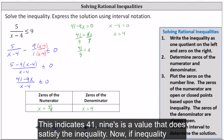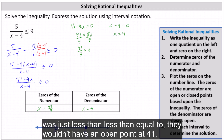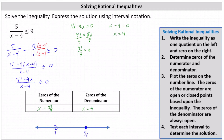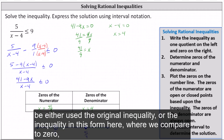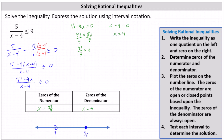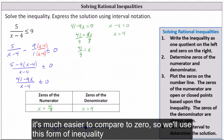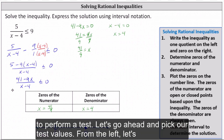This indicates 41 ninths is a value that does satisfy the inequality. If the inequality were strictly less than, we would use an open point at 41 ninths. Next, we test each interval to see whether it satisfies the inequality. We can use the original inequality or the form compared to zero — it's much easier to compare to zero, so we'll use that form.